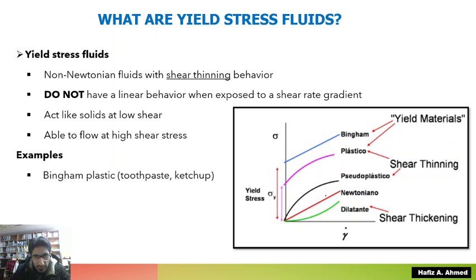As you can see in the diagram, the flow behavior of non-Newtonian fluids is quite different from Newtonian fluids. More specifically, let's look at these two lines — they represent the behavior of yield stress fluids. That means they have a unique characteristic of behaving as a solid material under low shear stress and as a liquid at high shear stress.